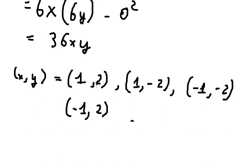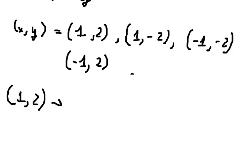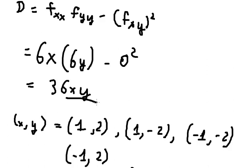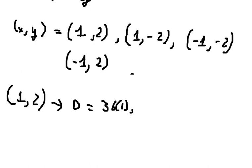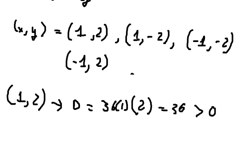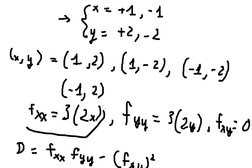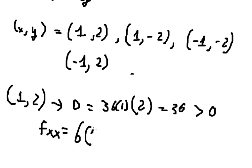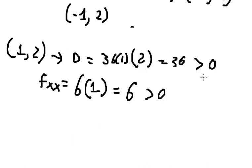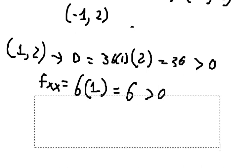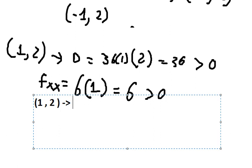If we plug in the point (1, 2) into our D formula, we get 36 times 1 times 2, which equals 36. This is greater than zero. Now we consider Fxx at this point: putting x=1 in gives number 6, which is positive. Since D is positive and Fxx is positive, the point (1, 2) is a relative minimum.